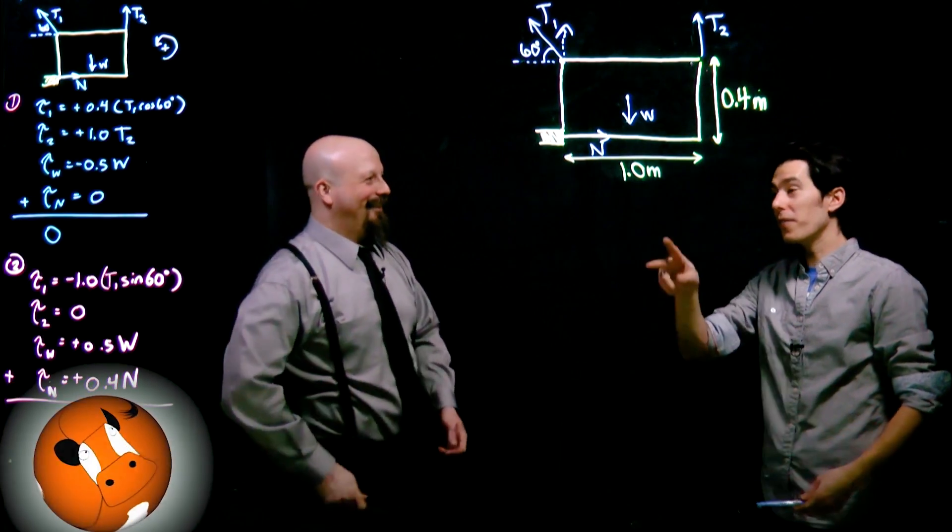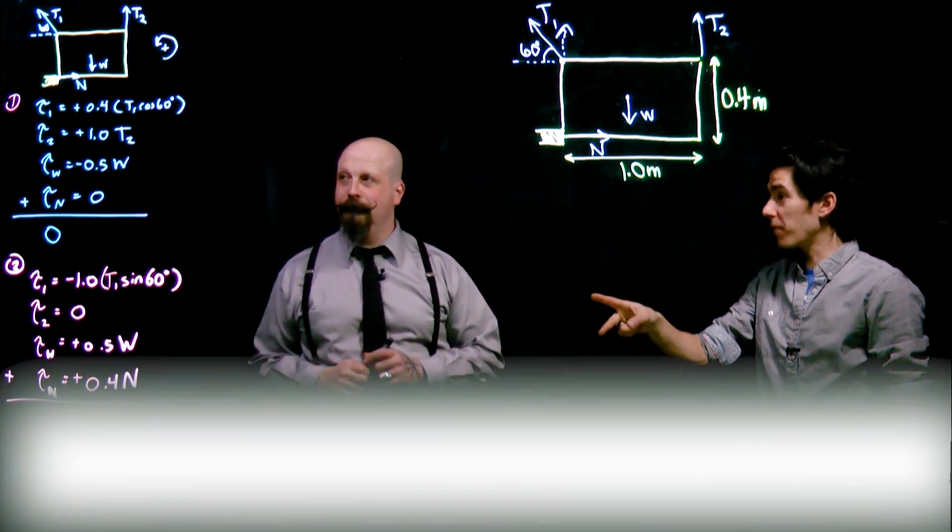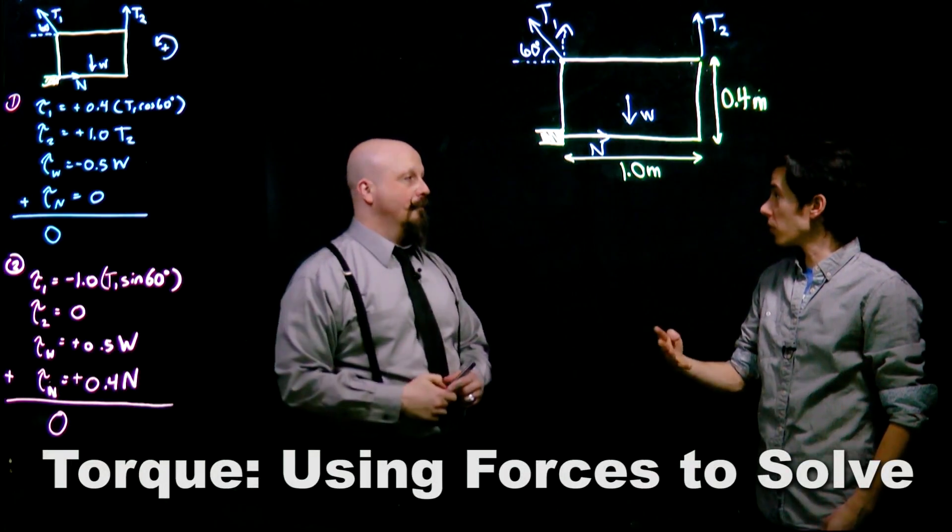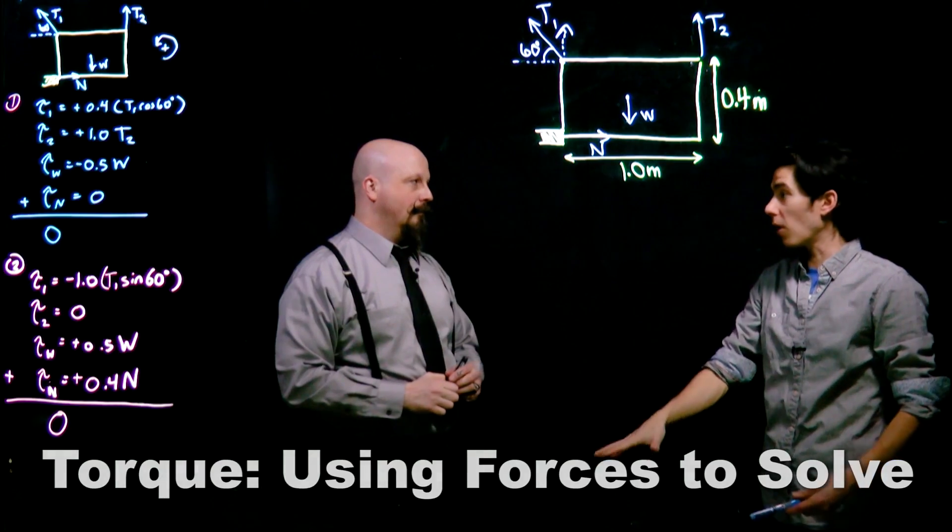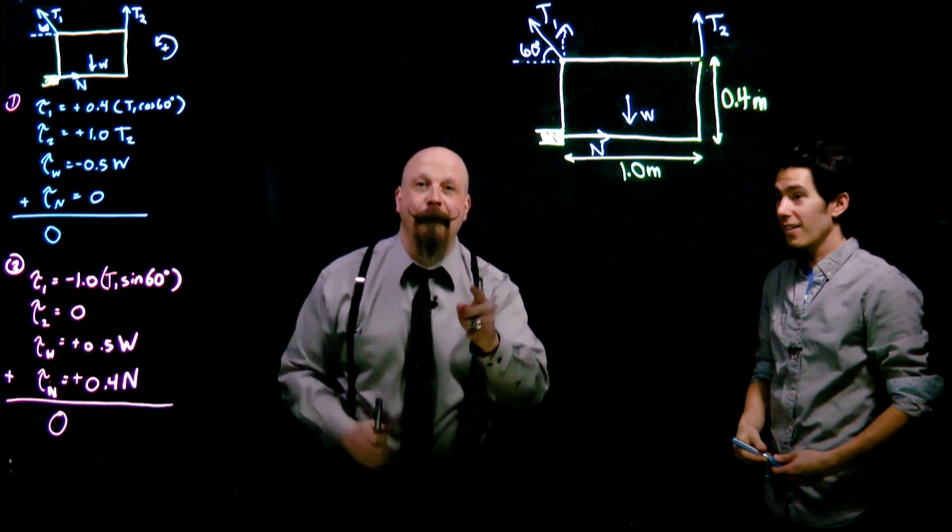One last thing to do is we've come up with two equations because of the two pivot points, but we've got four unknowns, so we need two more equations to solve for all of those forces. Fundamental theorem of algebra, boom.